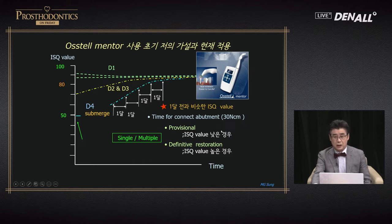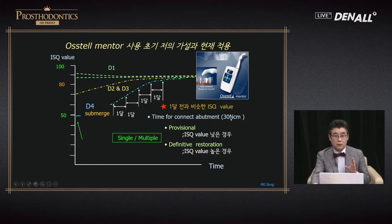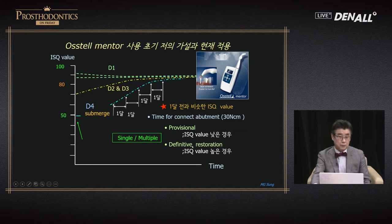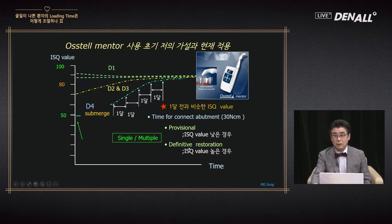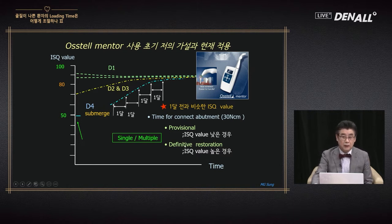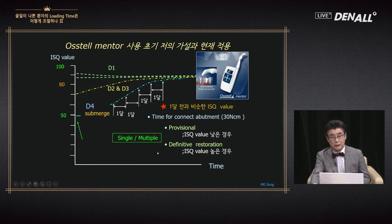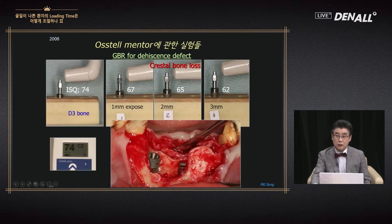In the beginning, if the ISQ value is low, I connected with 30 Ncm. As it showed flat, I would previously use 20 Ncm, but if it's flat, connecting with 30 Ncm seems okay. Regarding whether to do provisional or definitive restoration: if ISQ is below 75, I regard it as low; if more than 80, I think it's high. If ISQ is low, I use provisional for a long time. If it's high, I go with the final restoration. Whether it's single or multiple also changes the numbers — for multiple implants you can be more generous; for single implants, apply the criteria more strictly.